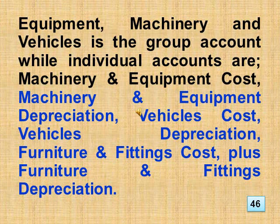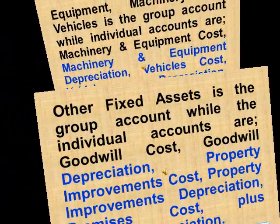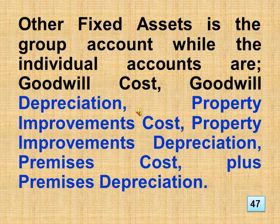Equipment, machinery and vehicles is the group account while individual accounts are: machinery and equipment cost, machinery and equipment depreciation, vehicles cost, vehicles depreciation, furniture and fittings cost, plus furniture and fittings depreciation. Other fixed assets is the group account while the individual accounts are: goodwill cost, goodwill depreciation, property improvements cost, property improvements depreciation, premises cost, plus premises depreciation.